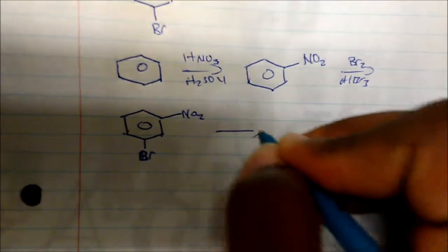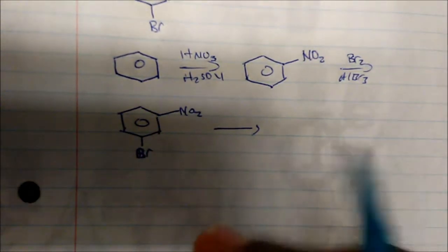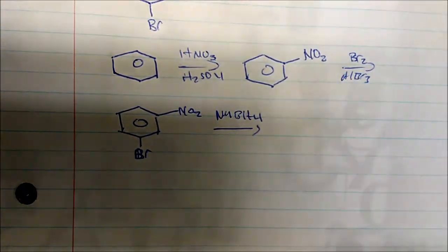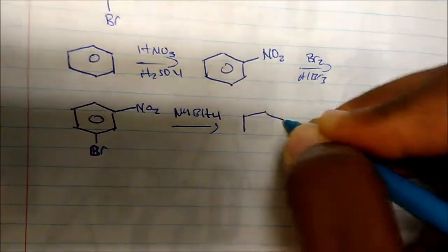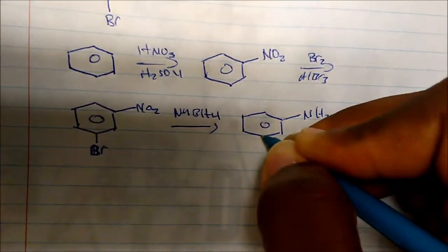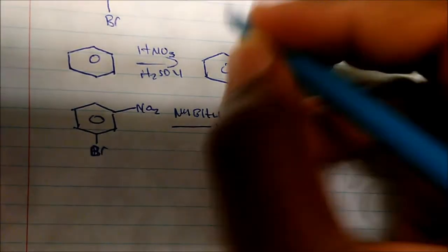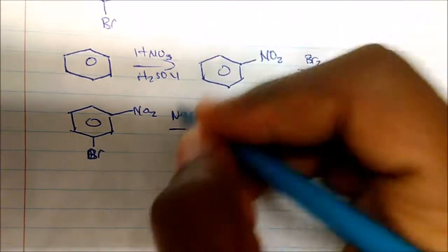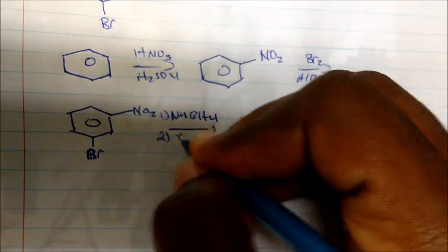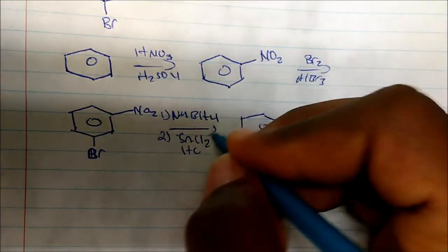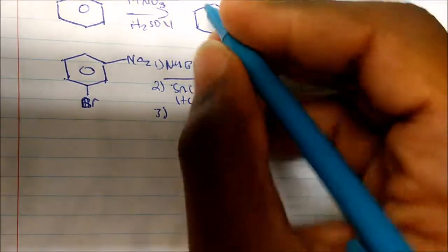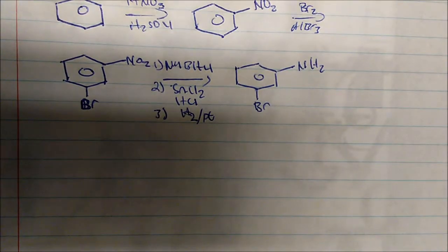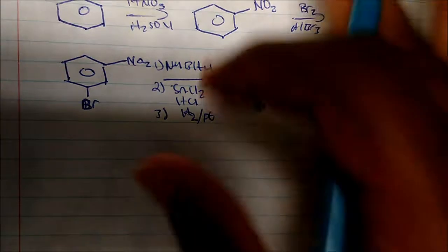Then we just reduce the nitro group, and there's a plethora of reducing agents. I typically use sodium borohydride. If I use sodium borohydride on this, I'll get my NH₂ group and my bromine. The reducing agent doesn't matter — it's very important that you just pick one. I could also use stannous chloride and HCl, or hydrogen and platinum as a catalyst.